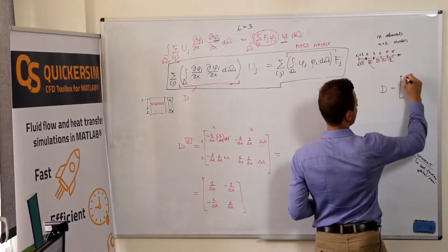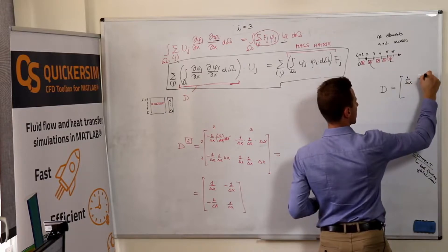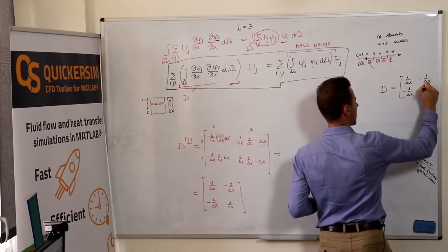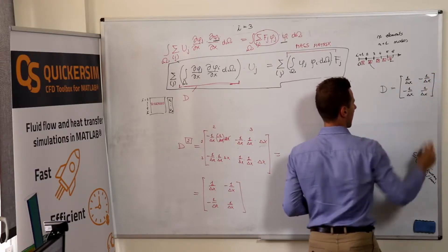So one divided by delta x, minus one divided by delta x, minus one divided by delta x, one divided by delta x.